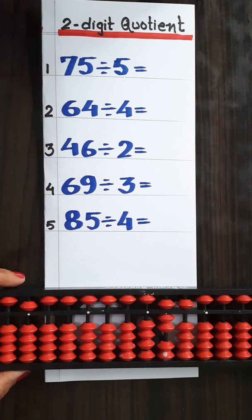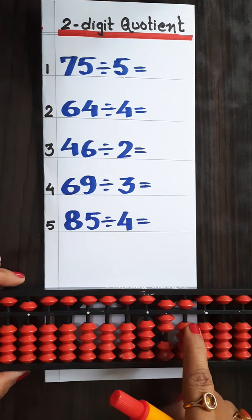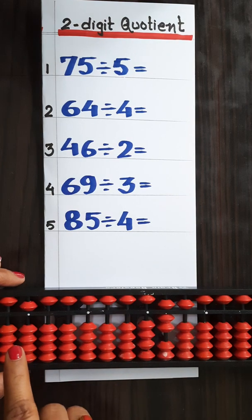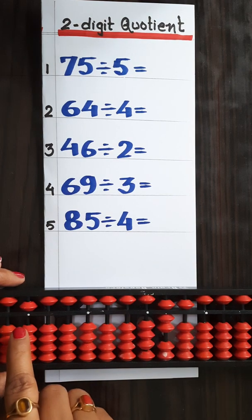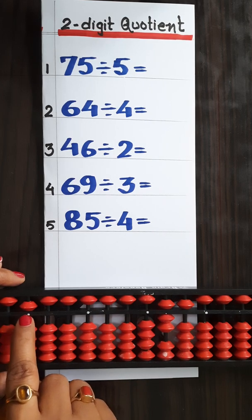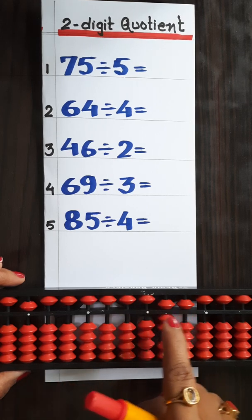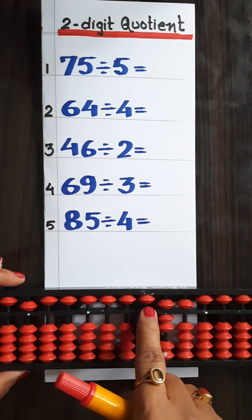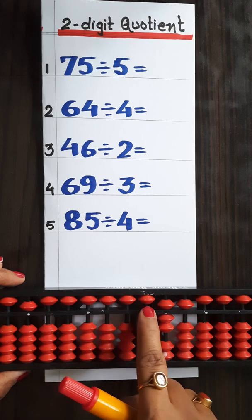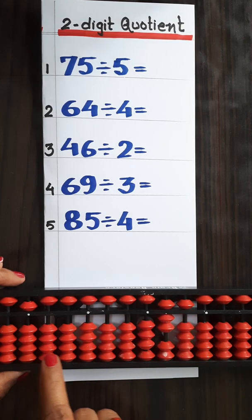Hello students, today I am going to explain the different types of division questions. The first question on my paper is 75 divided by 5. Placement remains the same on the left-hand side corner. First we have to place the divisor, that is 5, and the dividend will be placed after the center dot. This is the ones rod and this is the tens rod.